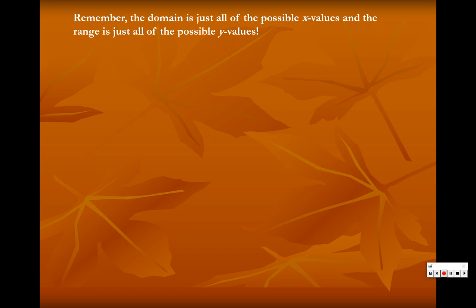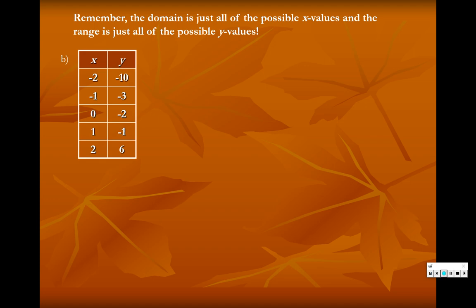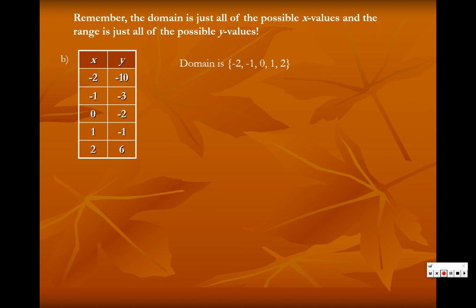Remember: domain is just all the possible x values, range is just all the possible y values. For a table of values, domain and range is easy — the x values are already listed for you: negative two, negative one, zero, one, two. For the range: negative ten, negative three, negative two, negative one, six. Just list them. Is this a function? It's all different x values — no x value goes to two different y values — so yes, this is a function.